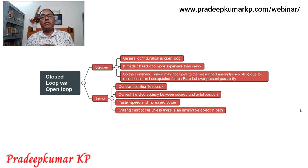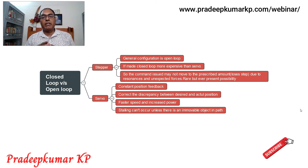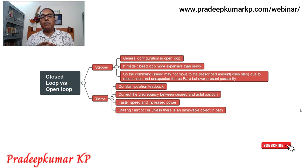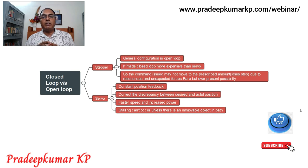In a servo, there is a constant feedback mechanism, so a corrective action is always available. If there is any discrepancy between the desired position and the actual position, a corrective pulse is generated and corrective action takes place. Because of this capability, we can run the servo motor at higher speeds with increased power, with no problem of losing steps or stalling — stalling cannot happen unless there is a physical obstruction on the path.